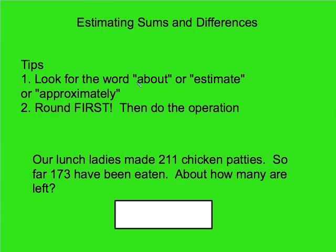Remember the same clues: look for those keywords, round first, and then do the operation. Our lunch ladies made 211 chicken patties. So far, 173 have been eaten. How many are still left? I notice that I have 'about' as a keyword, which lets me know I'm going to be doing rounding.